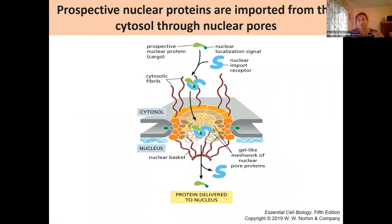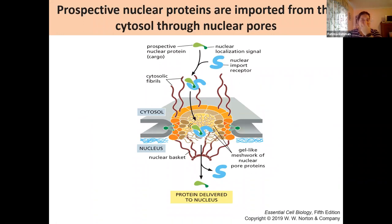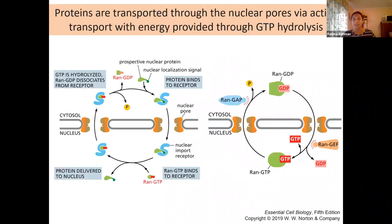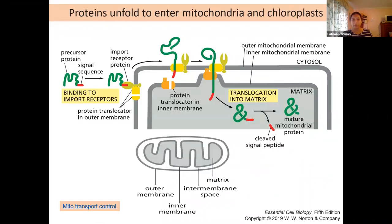Prospective nuclear proteins are going to move through and get imported from the cytosol through the nuclear pores with the help of the nuclear import receptor, which works through GTP hydrolysis. That's another example of a GTP hydrolysis protein.